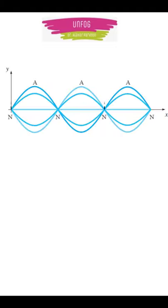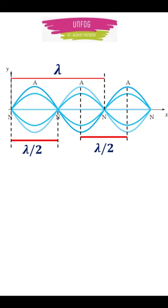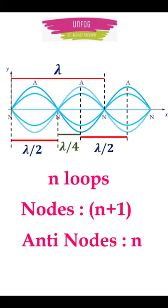Separation between two consecutive nodes or antinodes is half of the wavelength, that is lambda by 2, and separation between a node and an antinode is one-fourth of the wavelength, that is lambda by 4. If the string is vibrating in n loops, we get n plus 1 nodes and n antinodes.